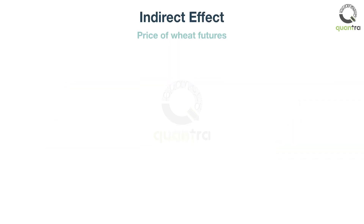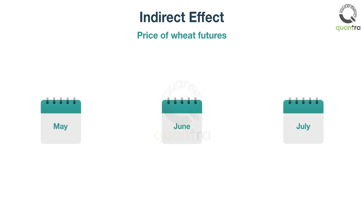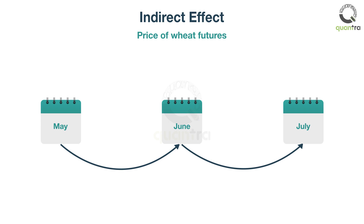To understand this intuitively, say you have the price of wheat futures at the end of May, June, and July. May's wheat price has some impact on June's wheat price, and June's wheat price has some impact on July's wheat price. So the price of wheat in May has some impact on the price of wheat in July, through June. This impact is known as the indirect effect.